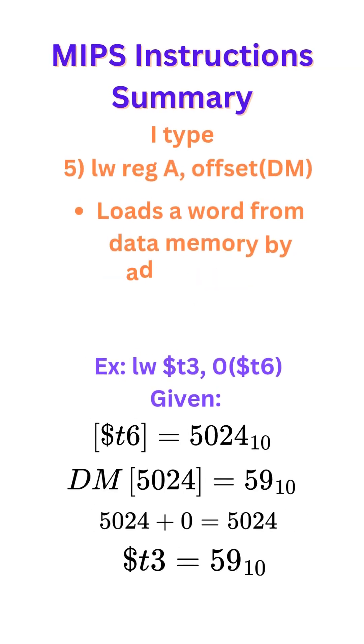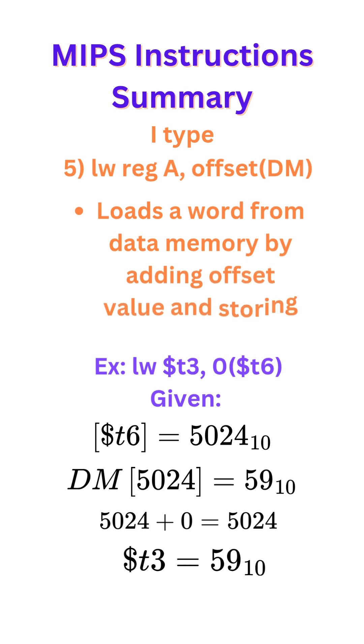Next is I-type. Load word register A, offset (base register). This instruction basically loads a word from data memory by adding an offset value to the base register and storing the result into register A.